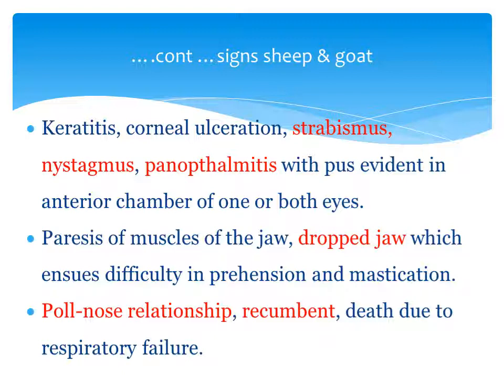There is paralysis of the muscles of the jaw; because of this paralysis there is dropped jaw, which causes difficulties in prehension and mastication of food. Sometimes a pole-nose relationship is observed, where the animal rests its head on a pole — this is called the pole-nose relationship and is due to meningitis. Because of the meningitis, the animal becomes recumbent and death follows due to respiratory failure.